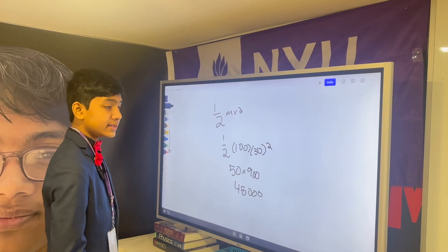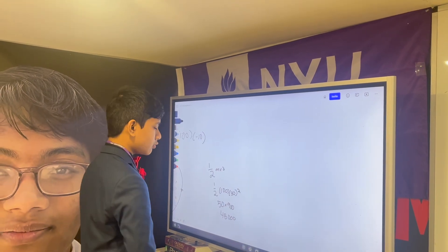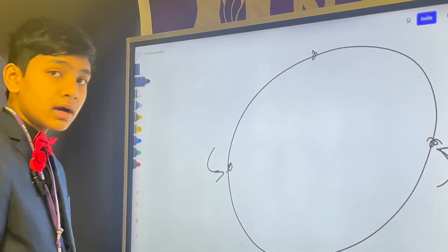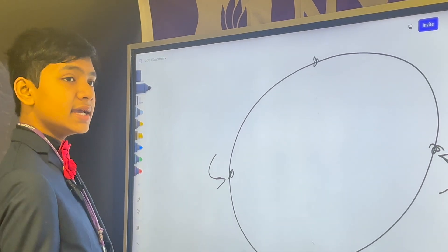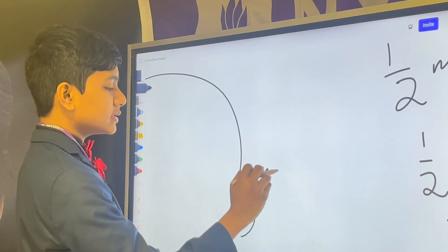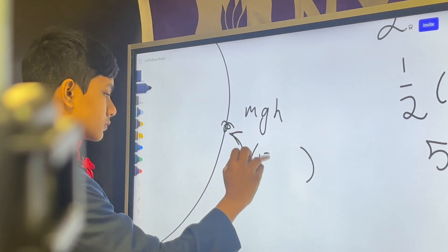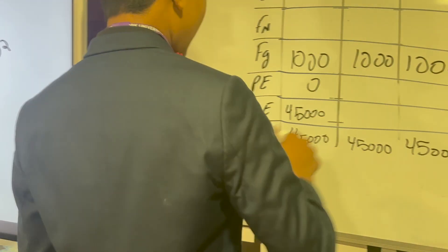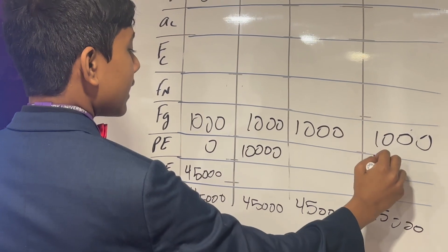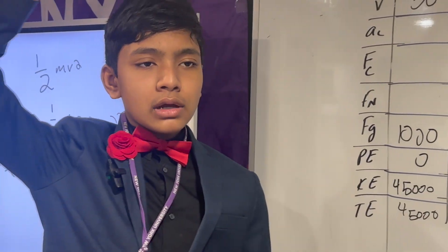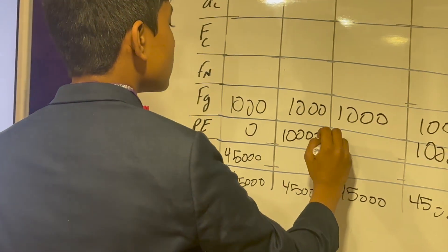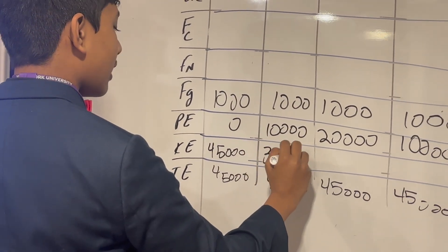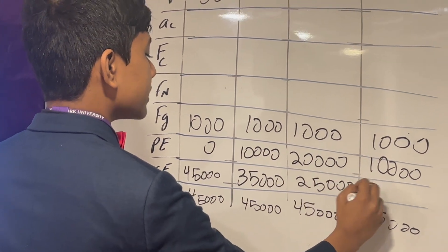Now we can find the initial centripetal acceleration, but before that we should find the potential energy at each of these points, then use conservation of energy to find kinetic energy at those points, then move on to velocity and then acceleration. Potential energy at a point is weight times height — 1,000 newtons times 10 meters off the ground — which means that at both 0 and 180 degrees we have 10,000 joules of potential energy. At 90 degrees you're at your highest point, one full diameter above, which doubles the height, giving 20,000 joules. So kinetic energy goes down: 35,000 here, 25,000 here, and then goes back up once potential energy recedes.